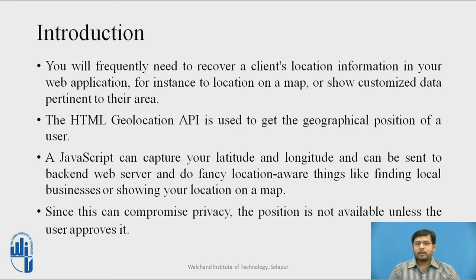You frequently need to recover the client's location information in your web application, for instance, the location on a map to show customized data. The HTML geolocation API is used to get the geographical position of the user. A JavaScript can capture the latitude and longitude and can be sent to the backend web server to do fancy location-aware things like finding local businesses or showing your location on a map. Since it compromises your privacy, the position is not available unless the user approves it.